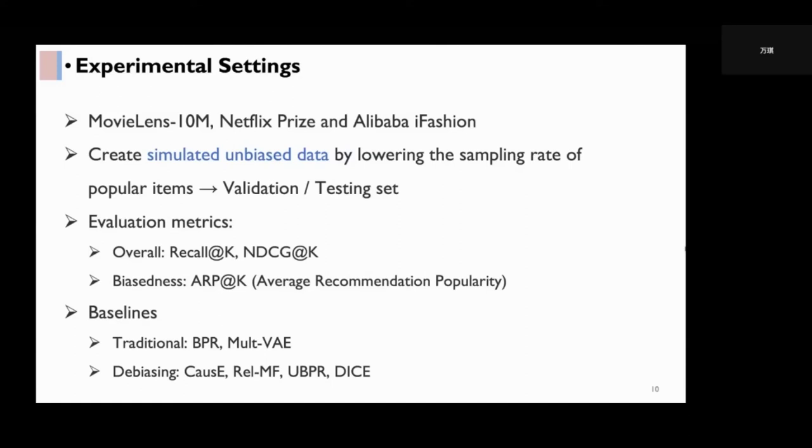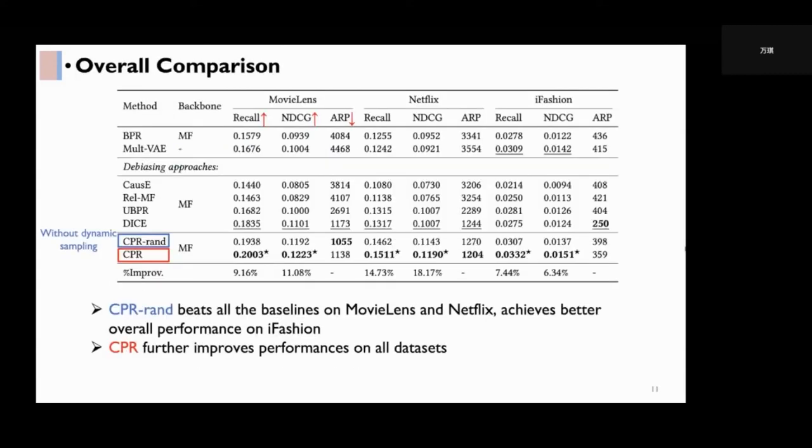We compare the proposed CPR loss with traditional methods including BPR and multi-VAE and debiasing approaches including CausE, Rel-MF, UBPR, and DICE. This table is the overall comparison. CPR is a proposed method and CPR-RAND means CPR without dynamic sampling.